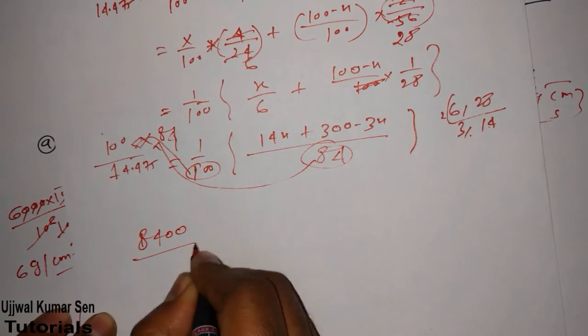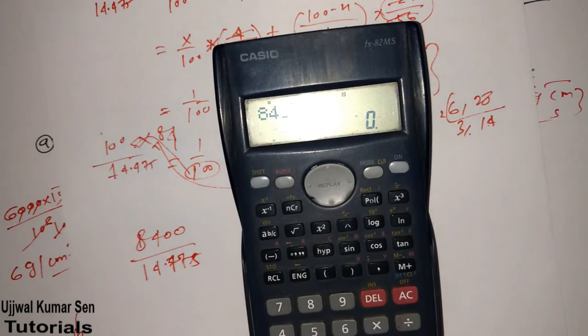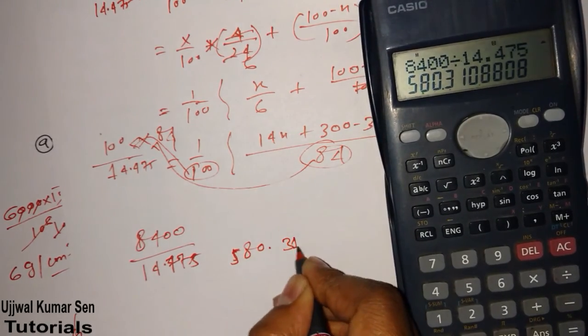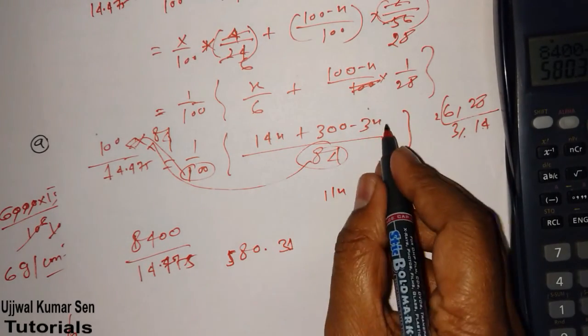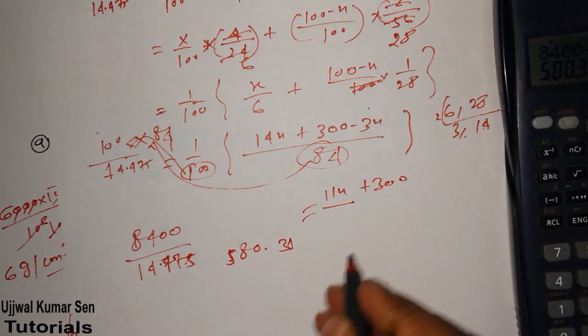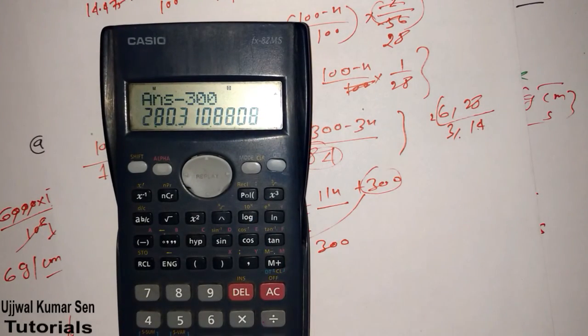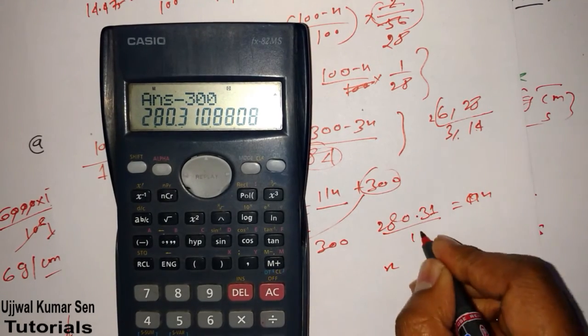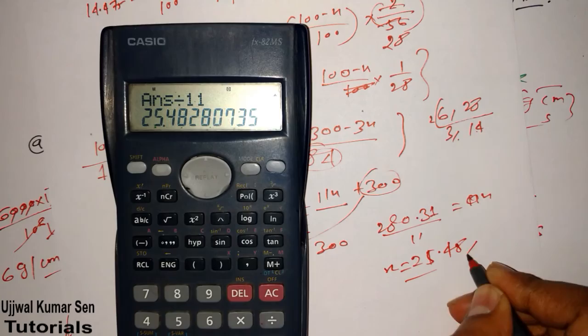What we got here exactly? 14X minus 3X is 11X plus 300 is equal to this. We can send this 300 to this side, minus 300, so 280.31 is equal to 11X. X is equal to this by 11. It's 25.48 percentage.